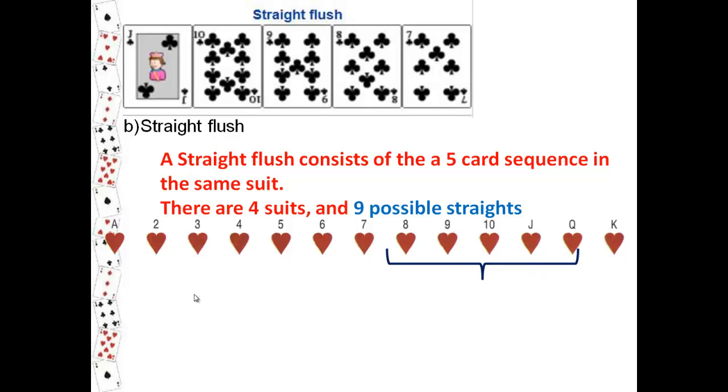And it can go all the way up to nine through king. That's nine possible straights. So we take four times nine and get thirty-six possible straight flushes in a deck of cards. That's it. We're only counting the number of possibilities.